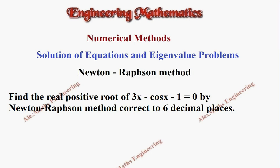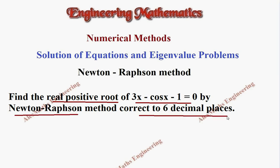Hi students, this is Alex here. In this video, we are going to find the real positive root of the given equation 3x minus cos x minus 1 equal to 0 by Newton-Raphson's method, correcting to 6 decimal places.